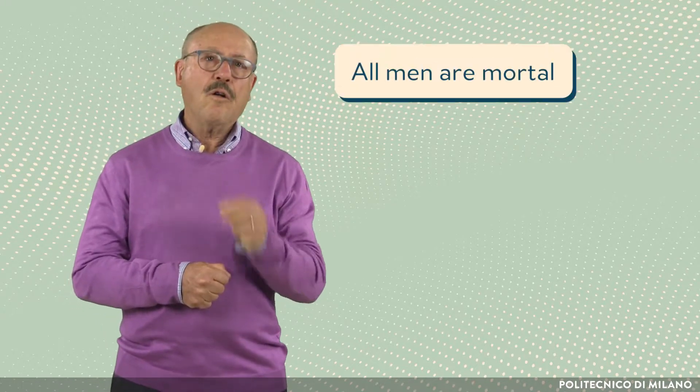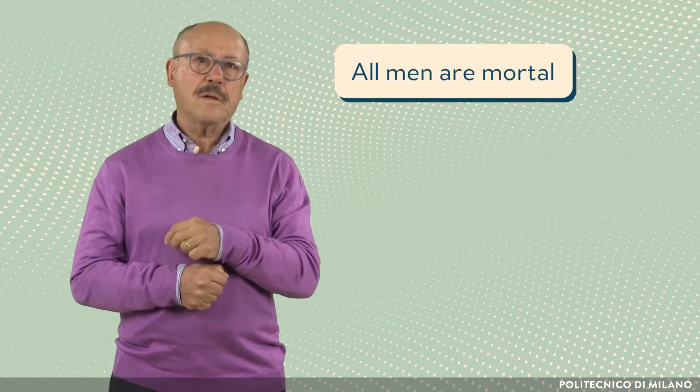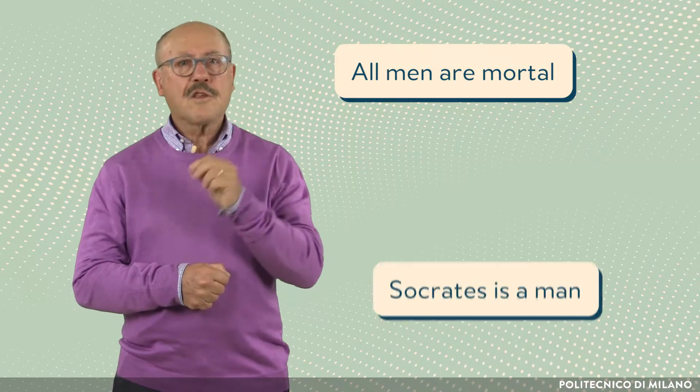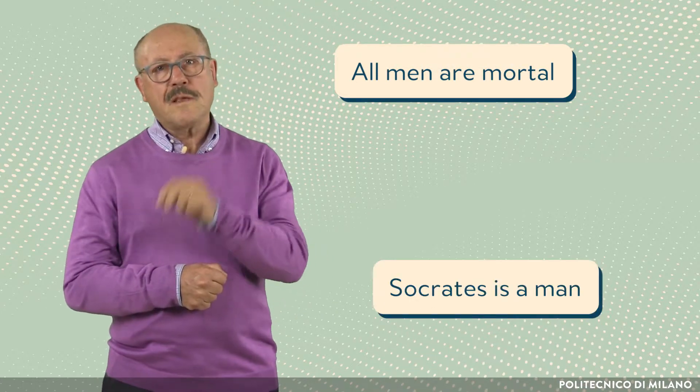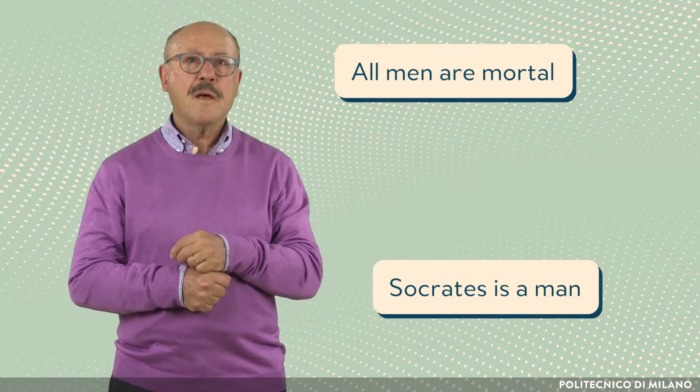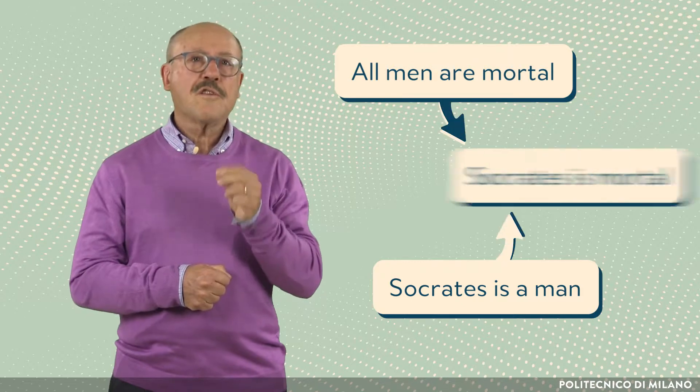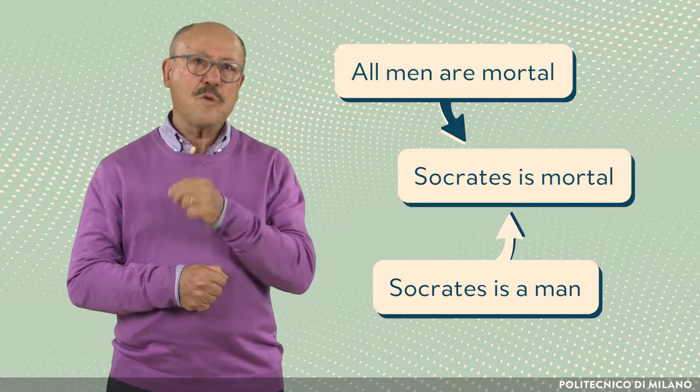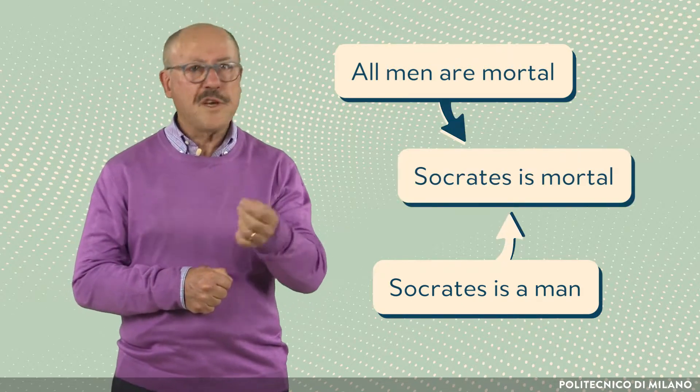A classical example of modus ponens is the following: 'All men are mortal' (major premise), 'Socrates is a man' (minor premise), from which we deduce 'Socrates is mortal' as the consequence and prediction. Let us see how deduction works in the context of a hypothetical and very simple research example.